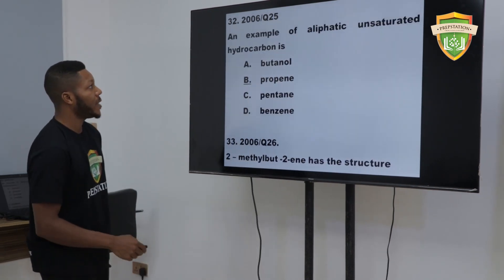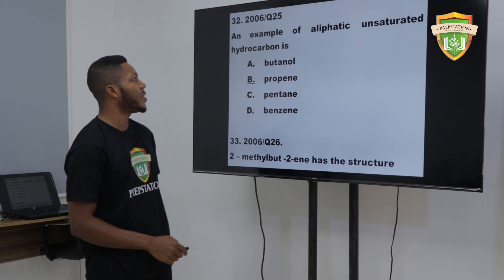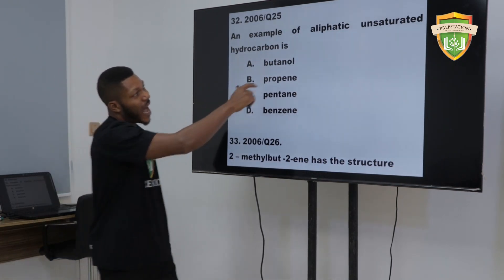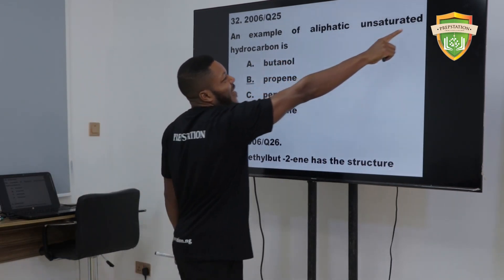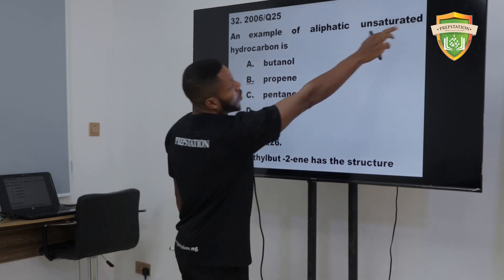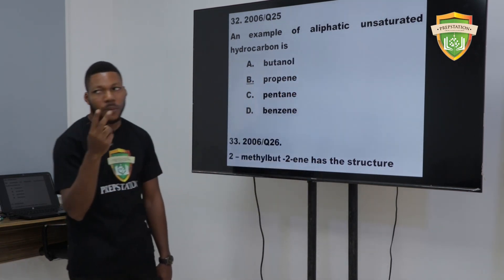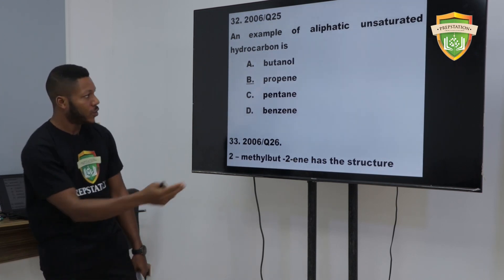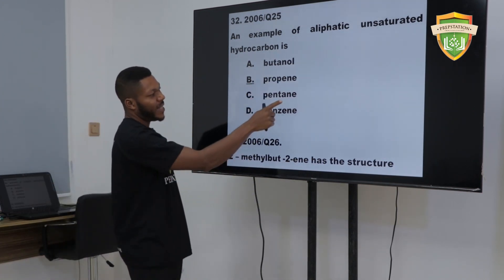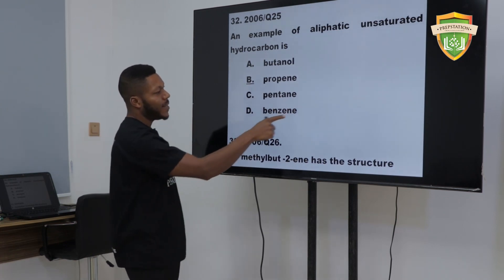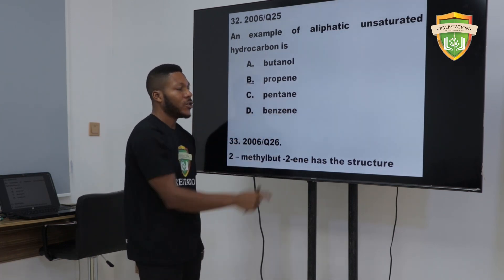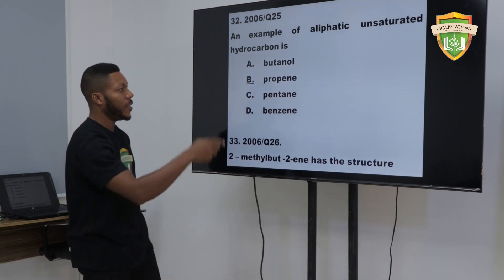An example of an aliphatic unsaturated hydrocarbon is — don't forget, aliphatic but unsaturated means it must contain a double or triple bond. Butanol is not the answer. Pentane contains only single bonds. Benzene is not aliphatic but aromatic. So the right option is propene.